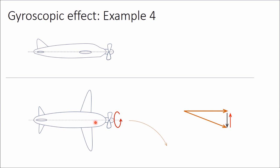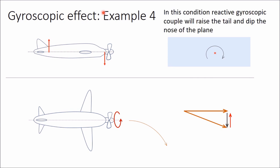Here the axis of rotation itself is moving because this plane is taking a turn, therefore the reactive gyroscopic couple will be in effect. This diagram is drawn in top view. When you look from the front, the reactive gyroscopic couple is represented as a cross. The required couple vector is obtained by a clockwise couple in the vertical plane, which will try to dip the nose and raise the tail. So in this condition, the reactive gyroscopic couple will raise the tail and dip the nose of the plane.